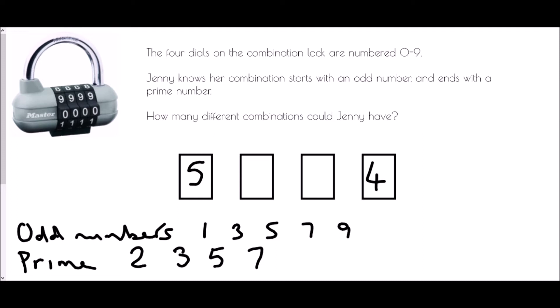The other two numbers we don't know anything about. All we know is that they are the numbers from zero to nine. So that is actually ten values in the second box and ten possible values in the third box. And again we're going to use our product rule. We are going to multiply. Five times ten is fifty, times ten is five hundred, and times four is two thousand combinations.